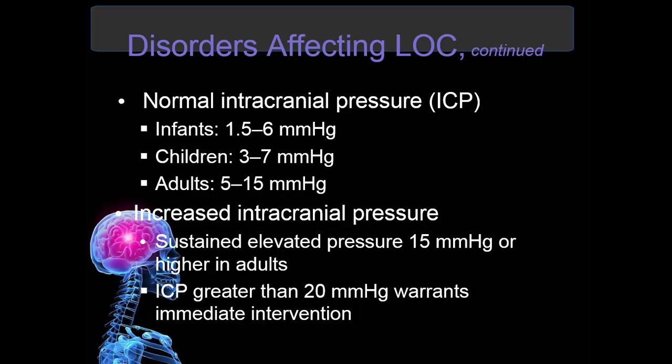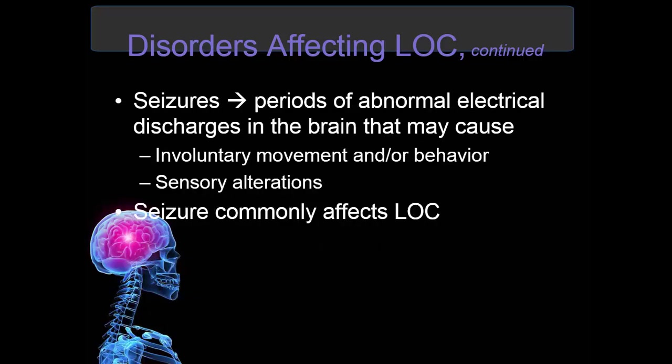Normal intracranial pressure for infants is 1.5 to 6 mmHg, for children is 3 to 7 mmHg, and for adults is 5 to 15 mmHg. Increased intracranial pressure is defined as sustained elevated pressures of 15 mmHg or higher in adults. ICPs greater than 20 mmHg warrant immediate interventions to get that pressure down. Seizures are periods of abnormal electrical discharges in the brain that can cause involuntary movement and/or behaviors, sensory alterations, and commonly affect level of consciousness.